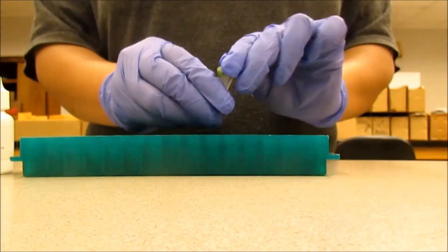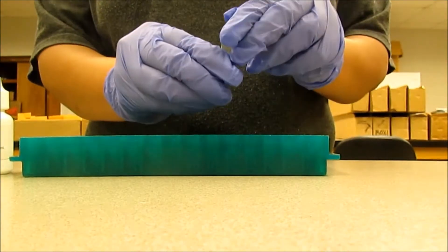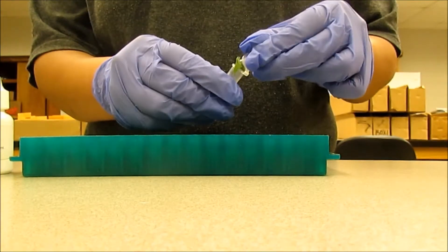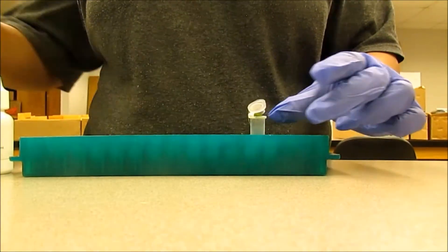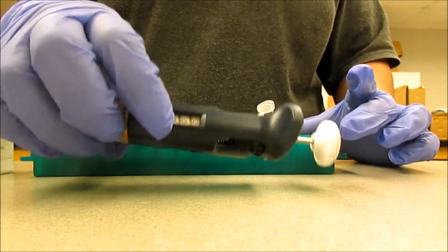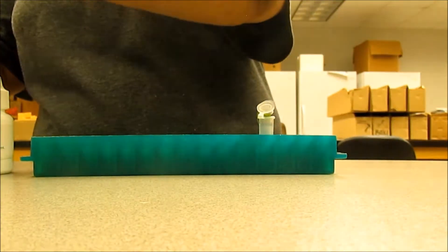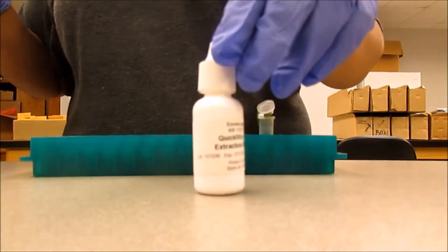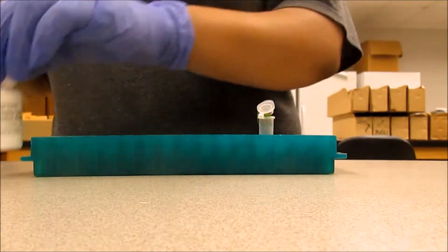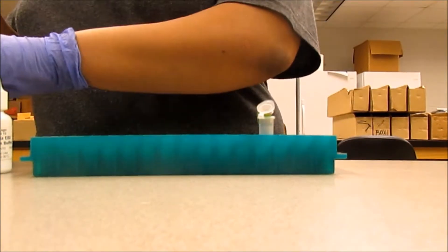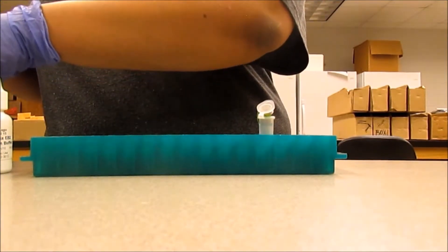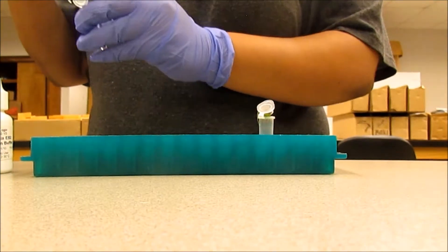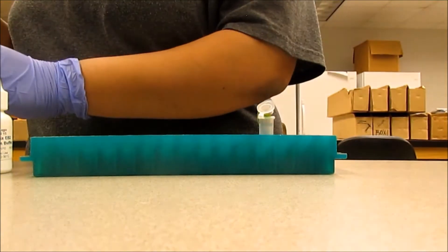So I have now collected the sample and we have to add the buffer to it. I have taken a 200 microliter pipette and I have to add 400 microliters of the extraction buffer to the sample. We are using the extraction buffer that is provided in the kit.